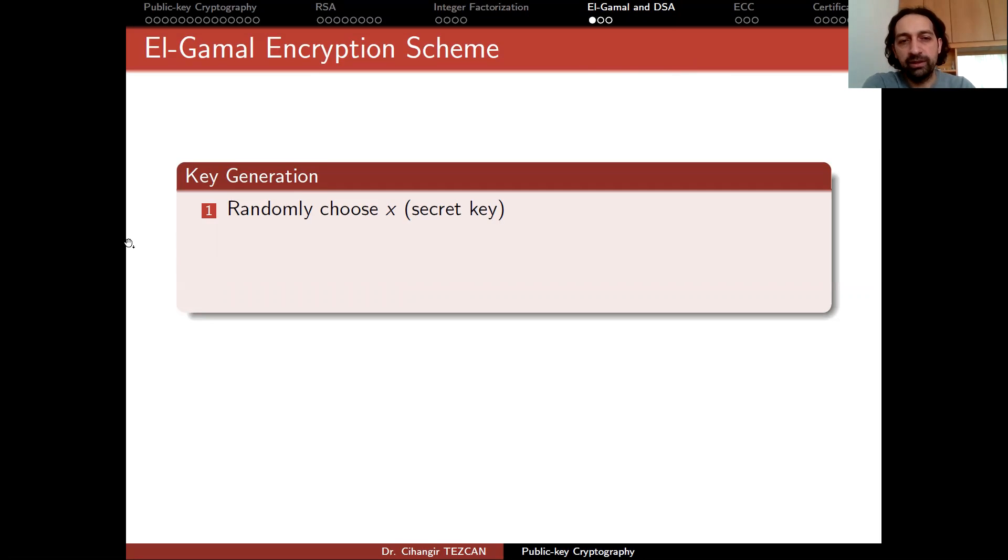In the key generation phase, we randomly choose an X and this would be our secret key. Then we compute g to the X that equals to Y. Of course, at this point, it depends which mathematical group you are using.